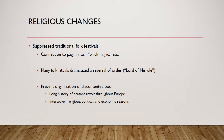Part of suppressing the traditional folk festivals was also to prevent the organization of the disorganized poor. There was a long history of peasant revolt throughout Europe during this period — over rights, food, starvation, land rights, and so on. So we see how there's an interweaving of religious, political, economic, and social issues: by suppressing these harvest festivals, authorities prevented the poor from possibly getting together and organizing en masse to protest their situation.